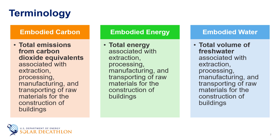It is also important to consider the energy and water impacts of the construction and demolition processes. Embodied energy is the total energy associated with the extraction, processing, manufacturing, and transporting of raw materials for the construction of buildings. Similarly, embodied water is the total volume of freshwater associated with these processes.